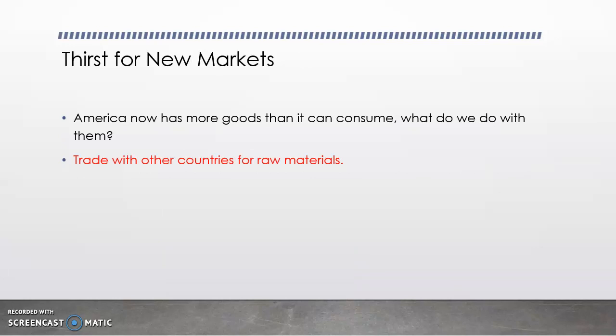So economically, we have way more goods than we can use, so what we're going to do is start trading them with other countries and getting raw materials that we need. We'll give them what we have extra of that they don't have, and we'll get back raw materials to make more stuff, sell more, and become more rich.